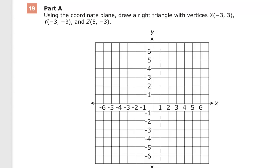This is the Grade 6 Math Practice Test for T and Ready. Question number 19. We're going to do both parts here, parts A and B. Using the coordinate plane, draw a right triangle with vertices (-3, 3), (-3, -3), and (5, -3). And they've named those points X, Y, and Z.